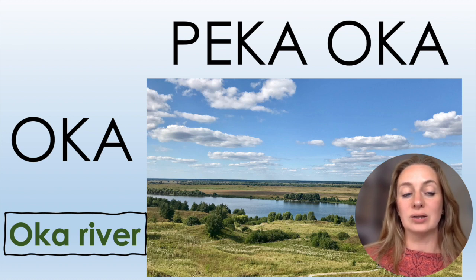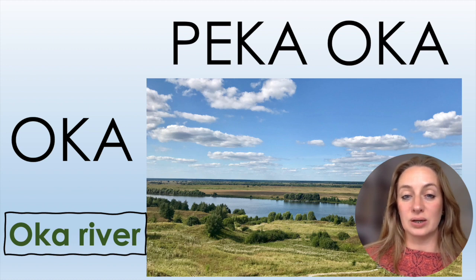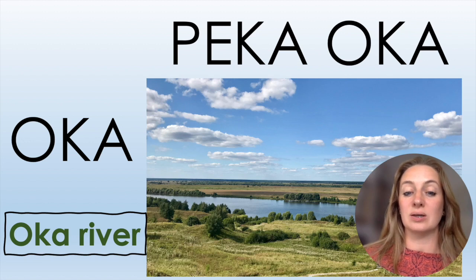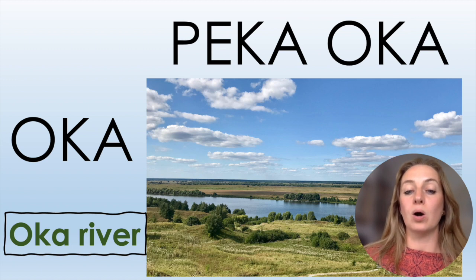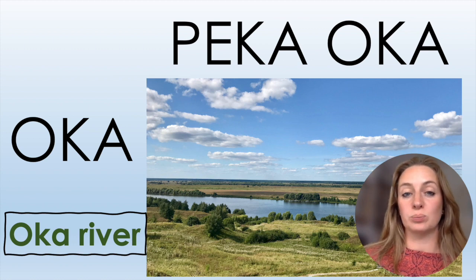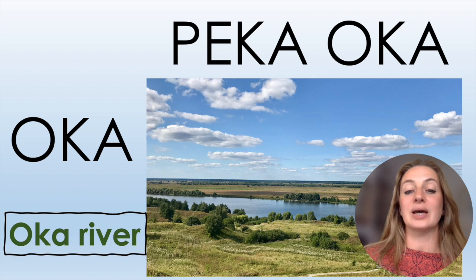Now for some cultural or geographical information: Ока. It's written О-ка but we pronounce it А-ка. This is a river — I went there to see a museum dedicated to the Russian poet Сергей Есенин, near Рязань, not far from Moscow. In Russian, we often pronounce О like А — река Ока.